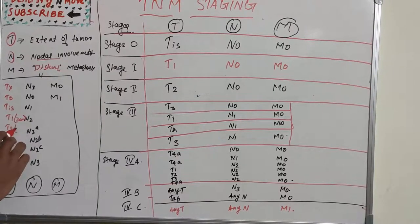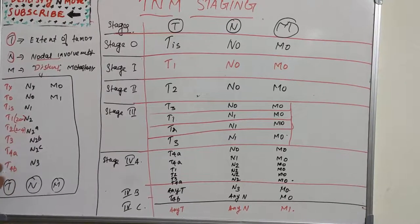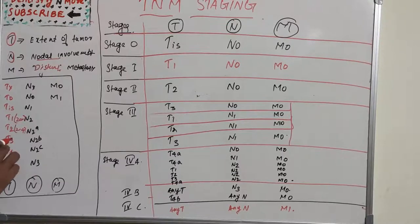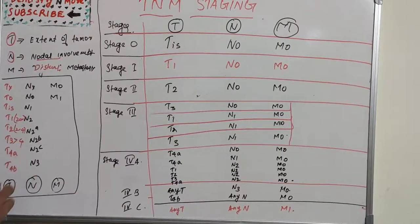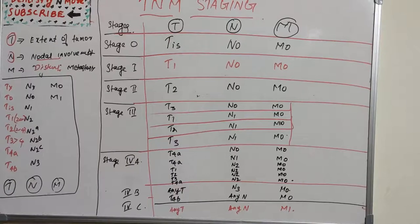T2 is tumor greater than 2 but less than 4 centimeters, whereas T3 is greater than 4 centimeters.